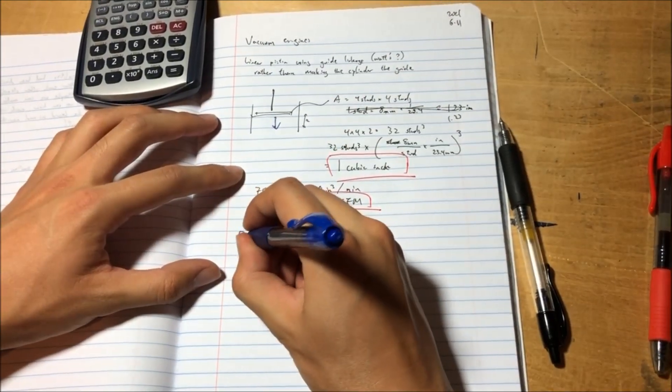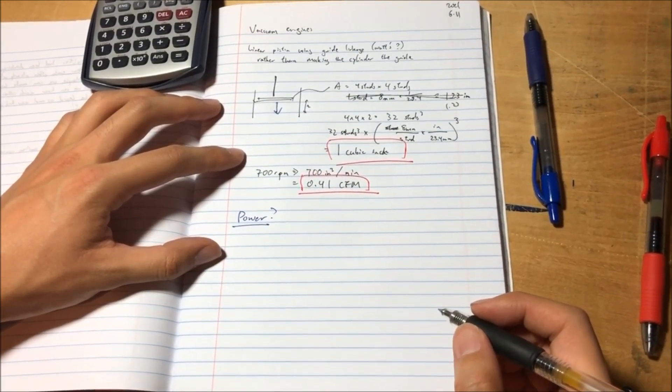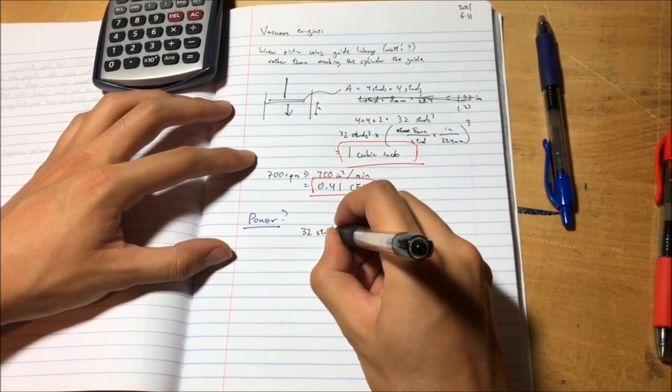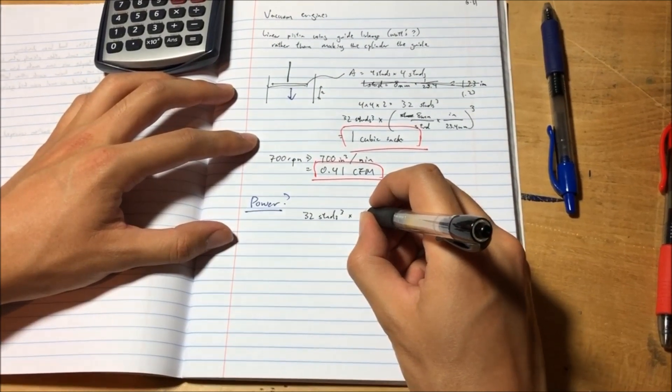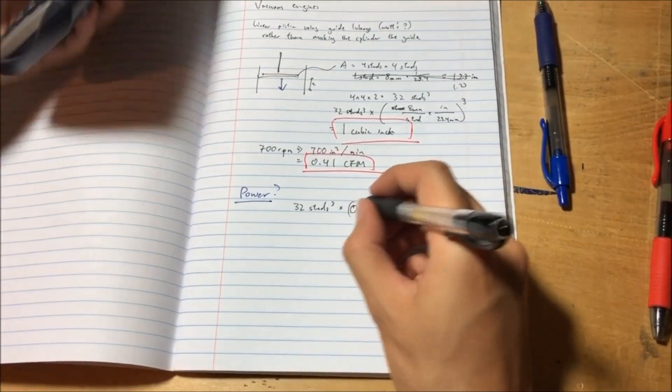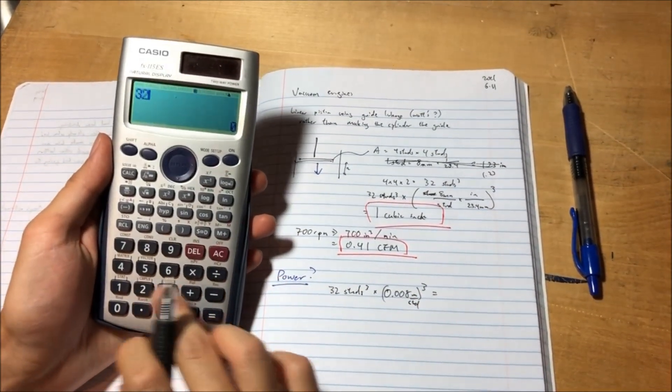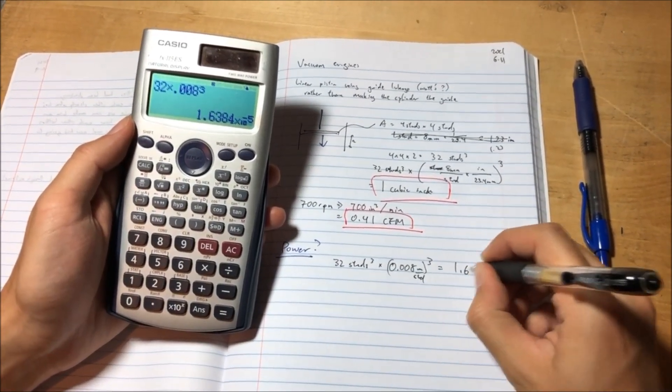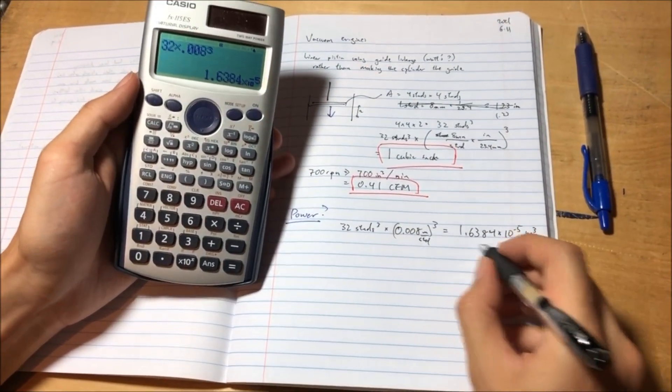So, the next question is basically, what's the power we're getting out of this motor? So, we're going to do this one in metric, because those are a little less miserable. So, back to the total travel, we had 32 studs cubed, right? So, now we're going to multiply that by, we're going to do this in meters. So, 0.008 meters, the whole thing cubed, per stud. So, 32 times 0.008, that thing cubed, is 1.6384 times 10 to the negative 5 meters cubed. So, this is the displacement of the engine.